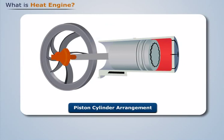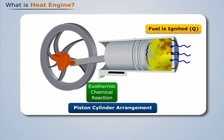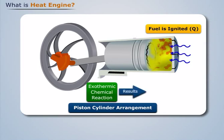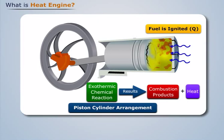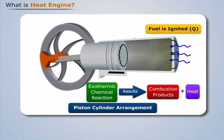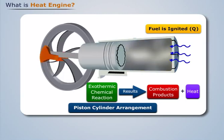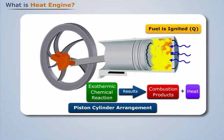When the fuel is ignited, it burns and an exothermic chemical reaction takes place. This results in the production of combustion products and generates a large amount of heat, which pushes the piston outwards and rotates the flywheel.